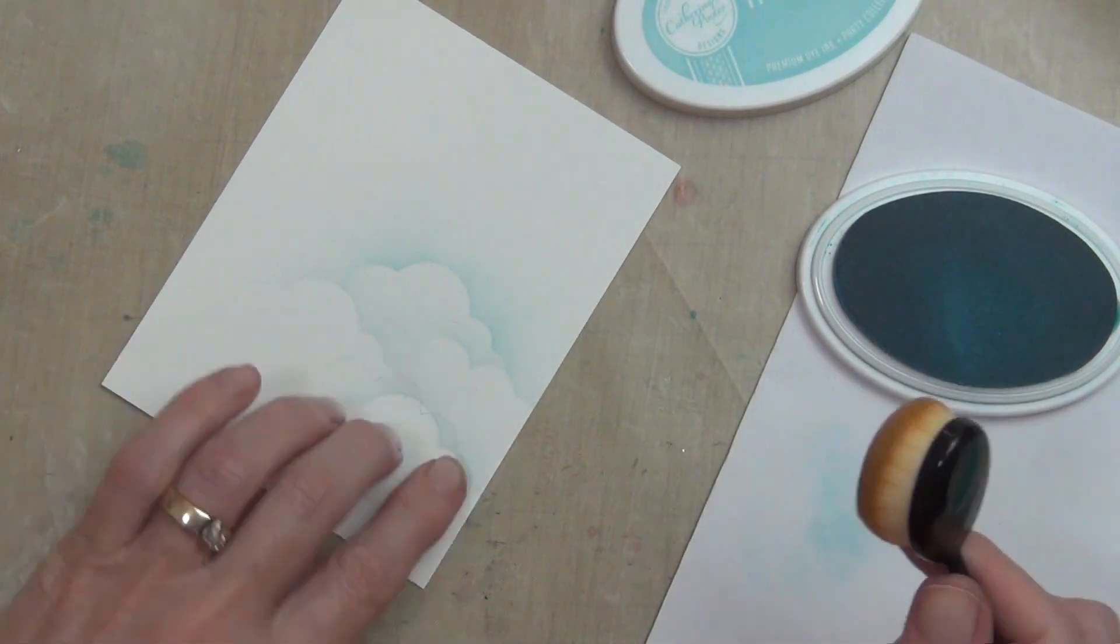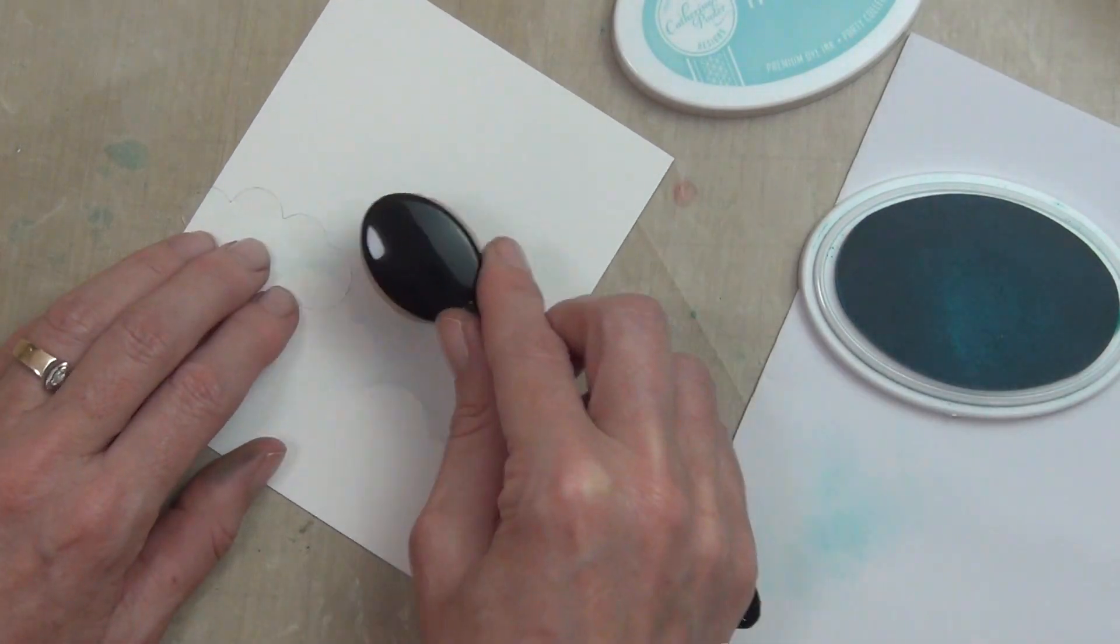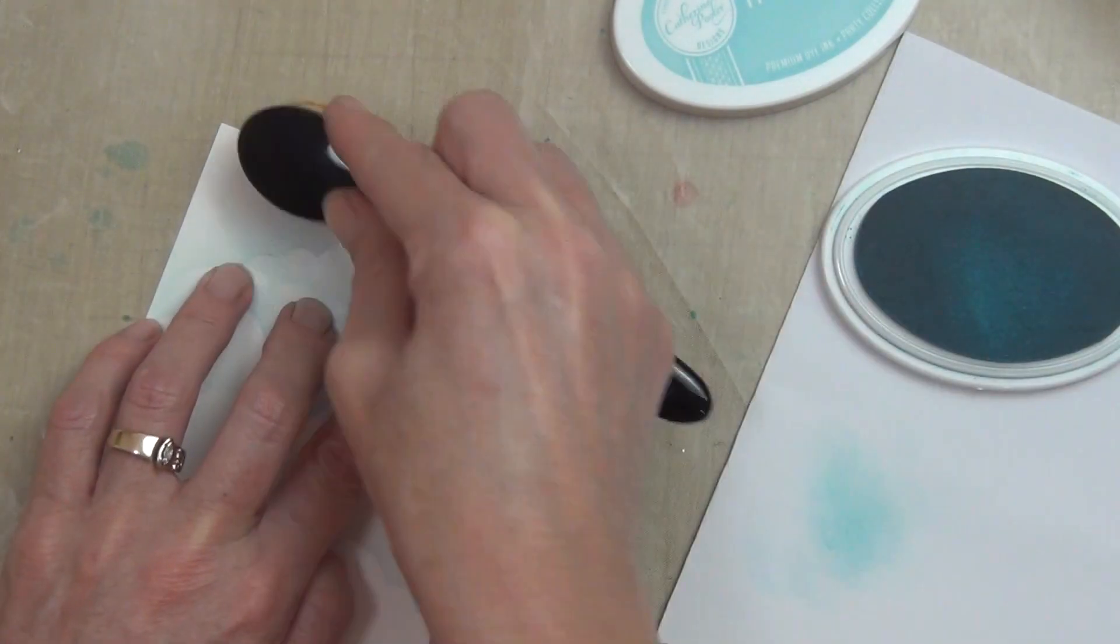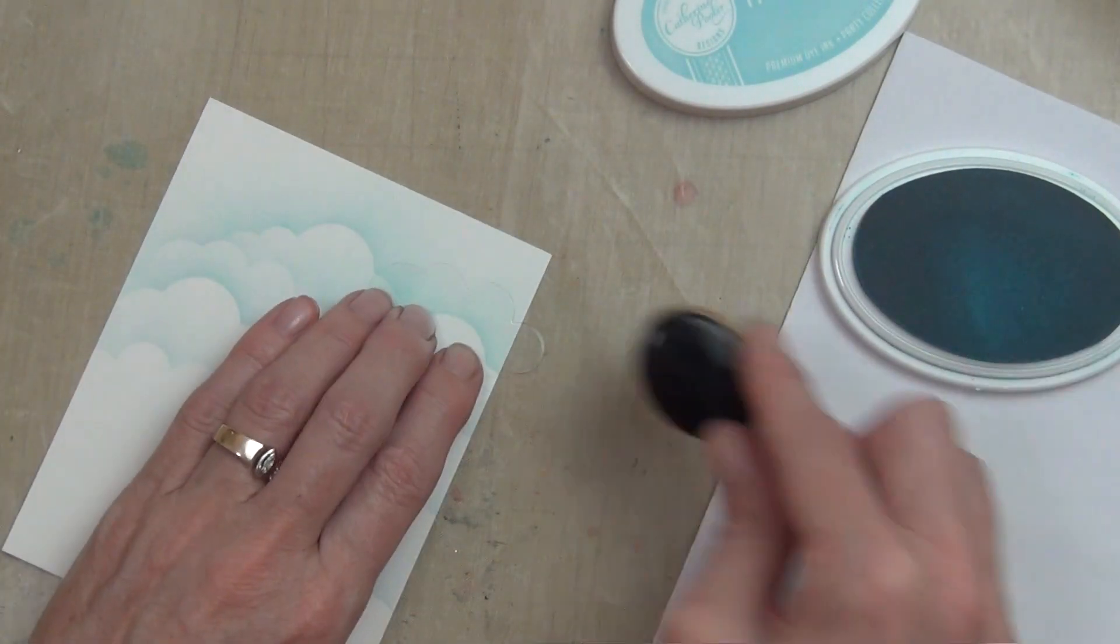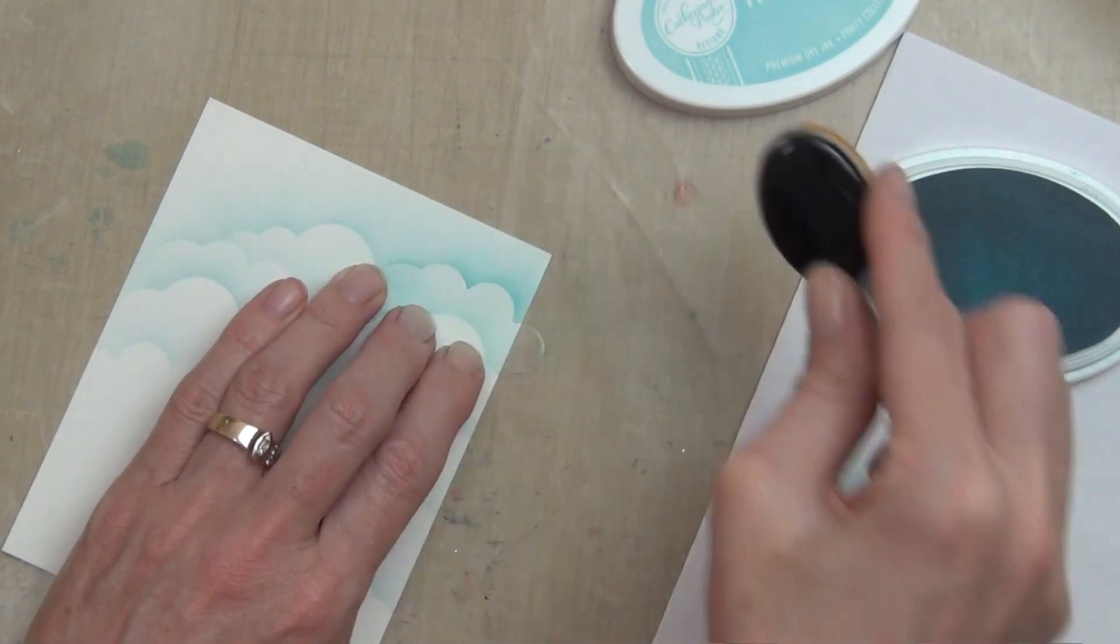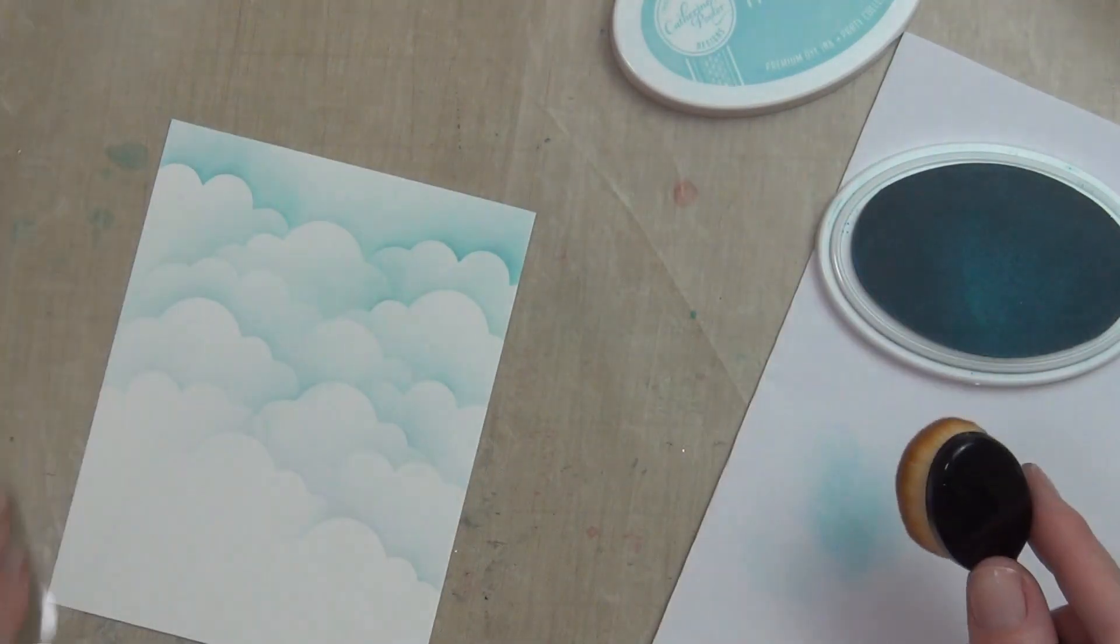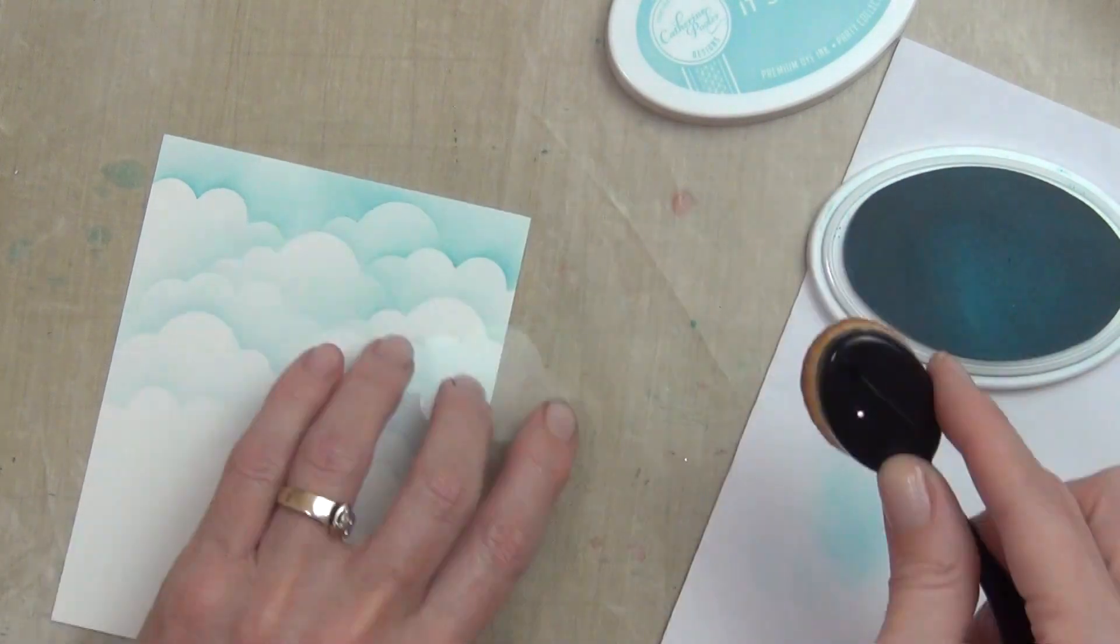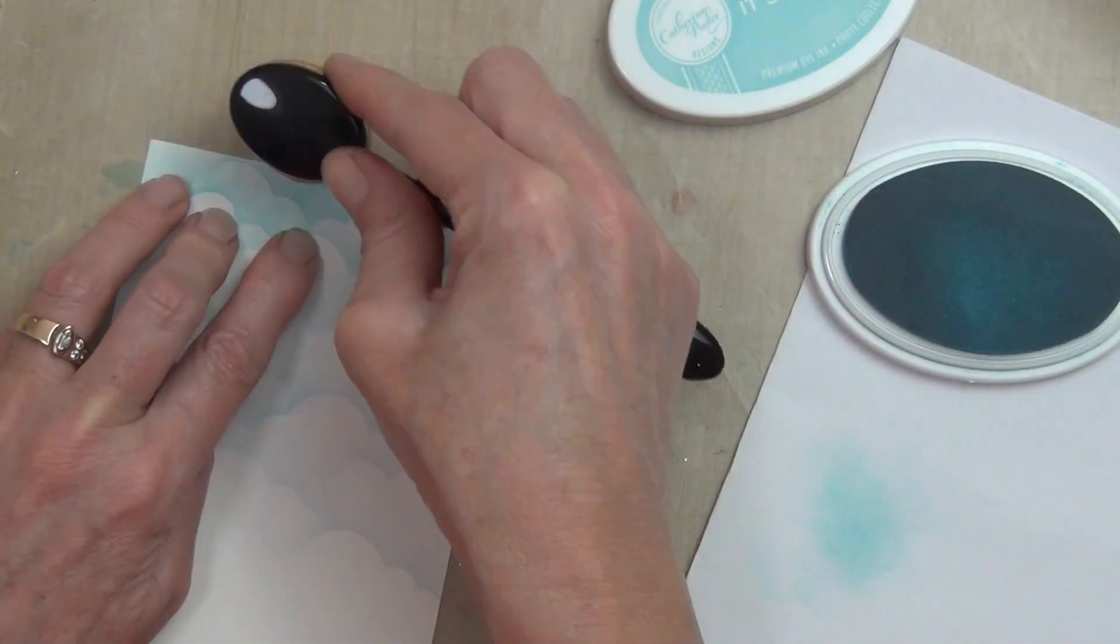What I'm doing here is actually flipping my cloud around. I ended up only using the larger of the image because it had the smaller bumps on the bottom of the cloud. I could actually just flip that around and get two different styles of cloud in one.